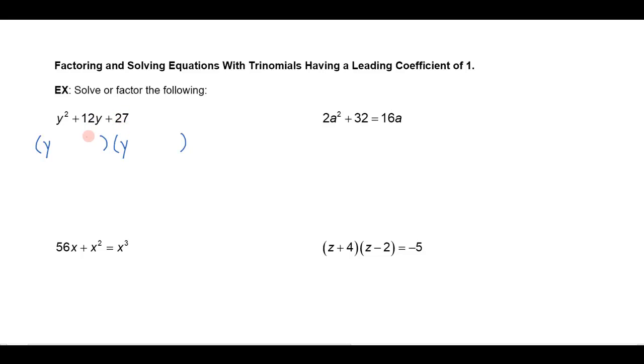So if I think of 27 as 9 times 3, if I were to put a 9 here and a 3 here, that would give me 27 and that would also give me 3y and 9y. And if I were to have a plus on each one of those, a plus 3y and a plus 9y makes a plus 12y, and then a plus 9 times a plus 3 gives me the 27.